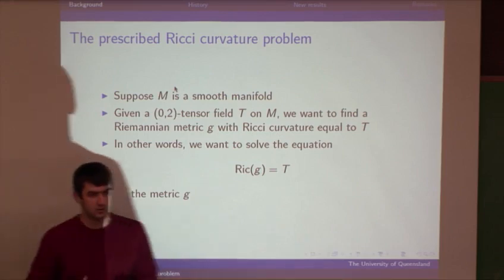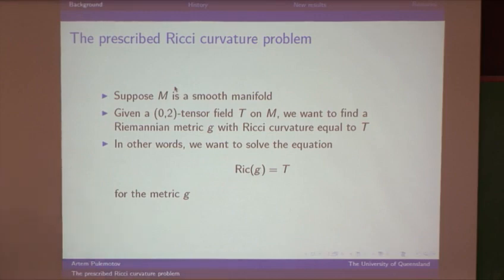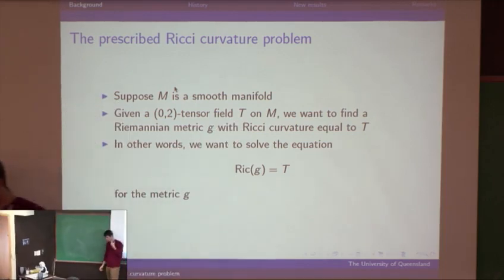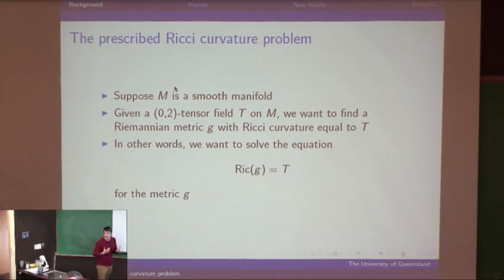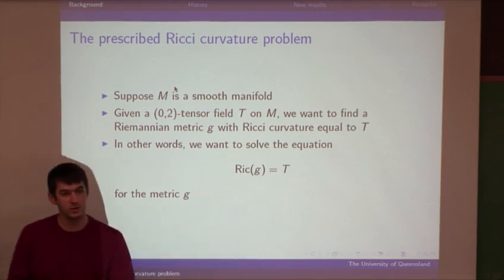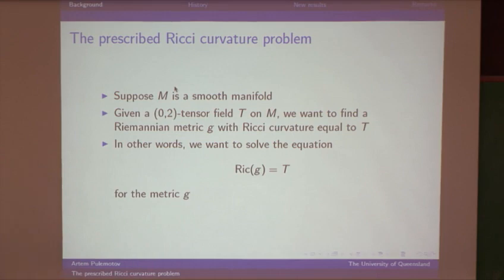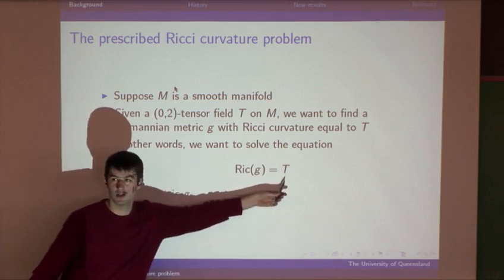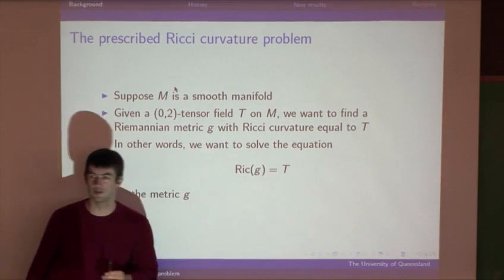Let's assume that we have a manifold — just a smooth manifold, which I'm going to call M. And let's assume that on that manifold we have a zero-two tensor field, which we'll call T. The prescribed Ricci curvature problem consists in finding a Riemannian metric on M whose Ricci curvature coincides with a given tensor T. Thus, we want to solve the PDE Ricci(G) = T, where the unknown G is a Riemannian metric and T is given ahead of time.